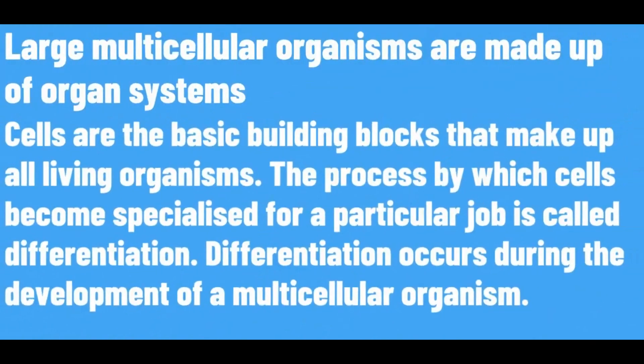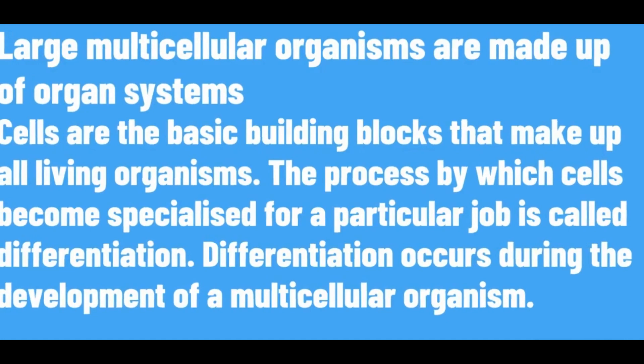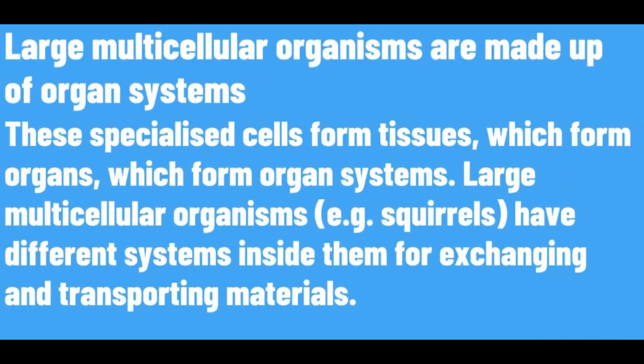Large multicellular organisms are made up of organ systems. Cells are the basic building blocks that make up all living organisms. The process by which cells become specialized for a particular job is called differentiation. Differentiation occurs during the development of a multicellular organism. These specialized cells form tissues, which form organs, which form organ systems. Large multicellular organisms have different systems inside them for exchanging and transporting materials.